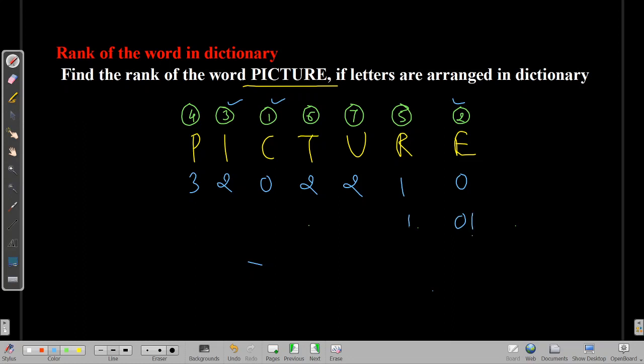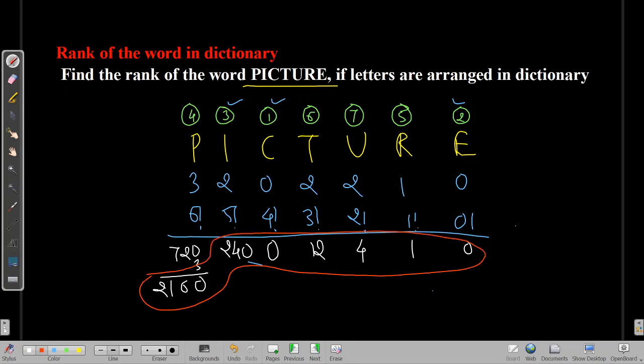Then what is the next step? 0 factorial, 1 factorial, 2 factorial, 3 factorial, 4 factorial, 5 factorial, 6 factorial. Just multiply the numbers. 0 into 0, 1, 4, 6 into 2 is 12, it is 0, 1, 2, 2 is 2, 4, 0. Then we have 6 factorial, 720 into 3 which is 0, 6, 2, 1, 6, 0. So 2, 1, 6, 0. Add all these numbers. Just add these numbers. So 2, 1, 6, 0 plus 240 plus 12 plus 4 plus 1 will give you 2417. So 2417 words are there before PICTURE. So just add 1, you will get the actual rank of PICTURE. 2418.